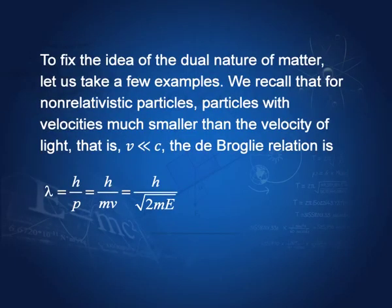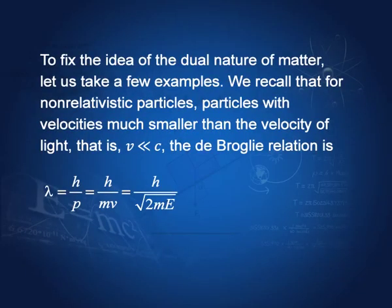For a non-relativistic particle — whose velocity is much smaller than the velocity of light, that is V much less than c — the de Broglie relation is lambda equal to h by p. Given p we can find lambda; given V and M we can find lambda; given M and E we can find lambda. Let us use these relations and consolidate what we have learnt about the de Broglie relationship.